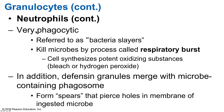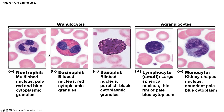Neutrophils are highly phagocytic cells and are the principal cells fighting a bacterial infection, sometimes referred to as bacteria slayers. These cells increase in numbers very quickly during a bacterial infection, so a high neutrophil count signals a bacterial infection somewhere. Microbes are killed by a process called respiratory burst, where oxygen is metabolized to produce bleach and hydrogen peroxide, and defensin-mediated lysis occurs. Granules containing defensin merge with microbe-containing phagosomes, and the defensins form peptide spears that pierce holes in the membrane of the ingested microbe.